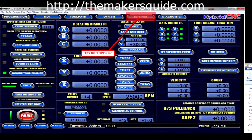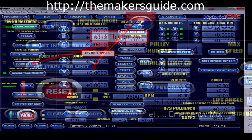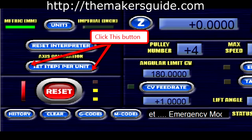To set the steps per unit in the Mach3 software, click on the settings tab to go to the settings screen first. Then click the set steps per unit button, which is located above the reset button on the Mach3 screen.